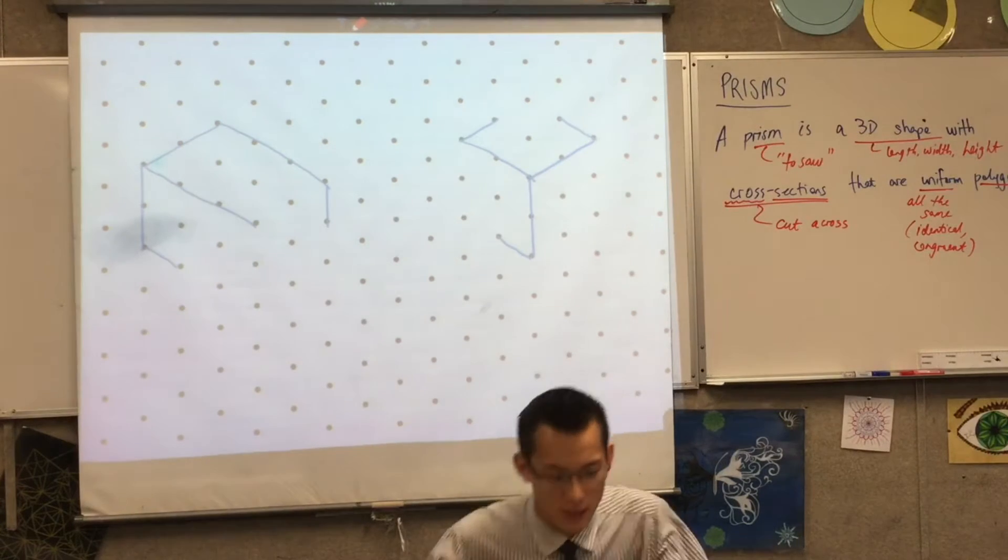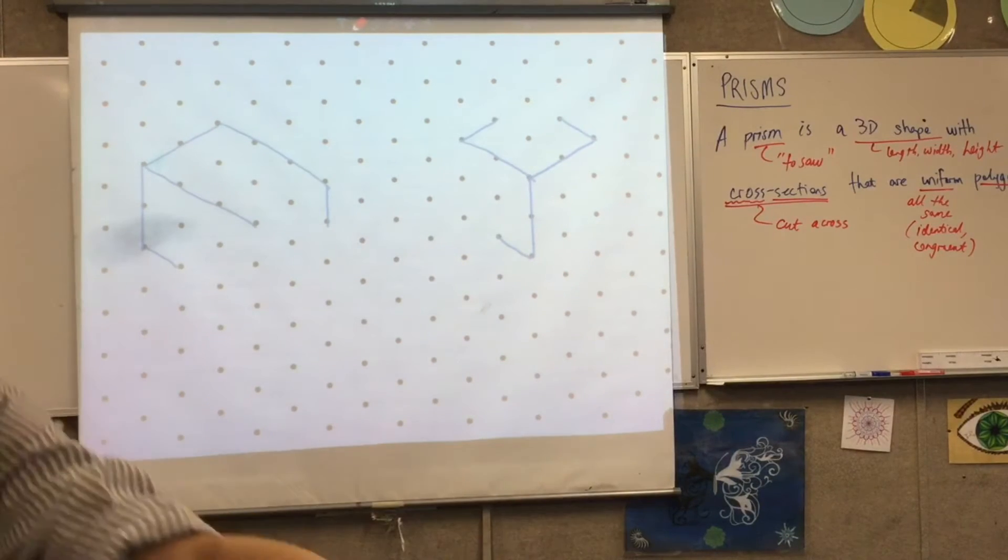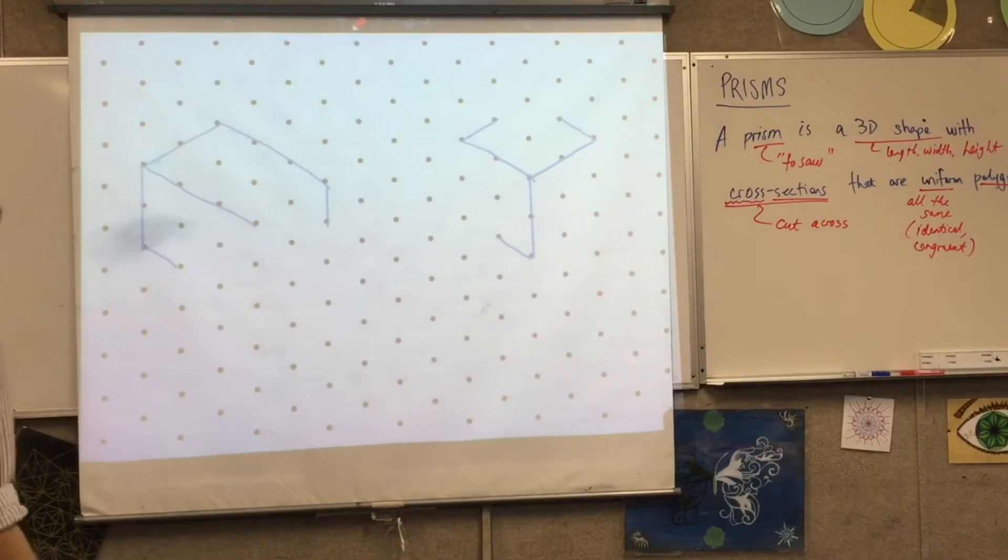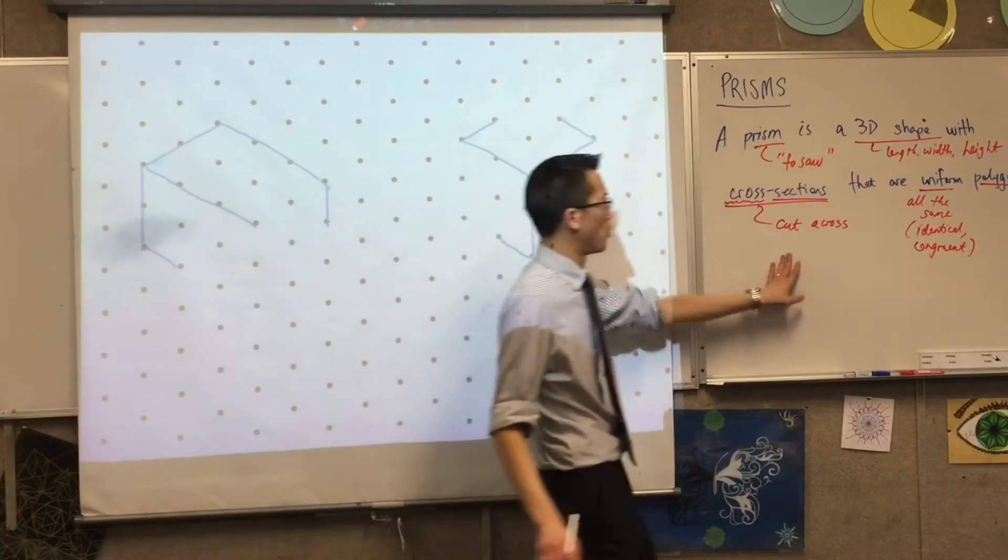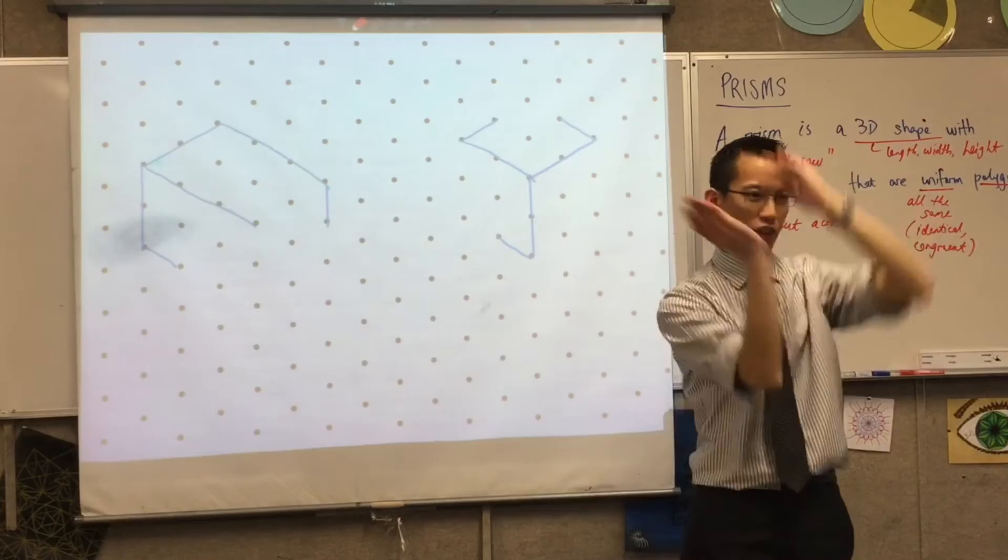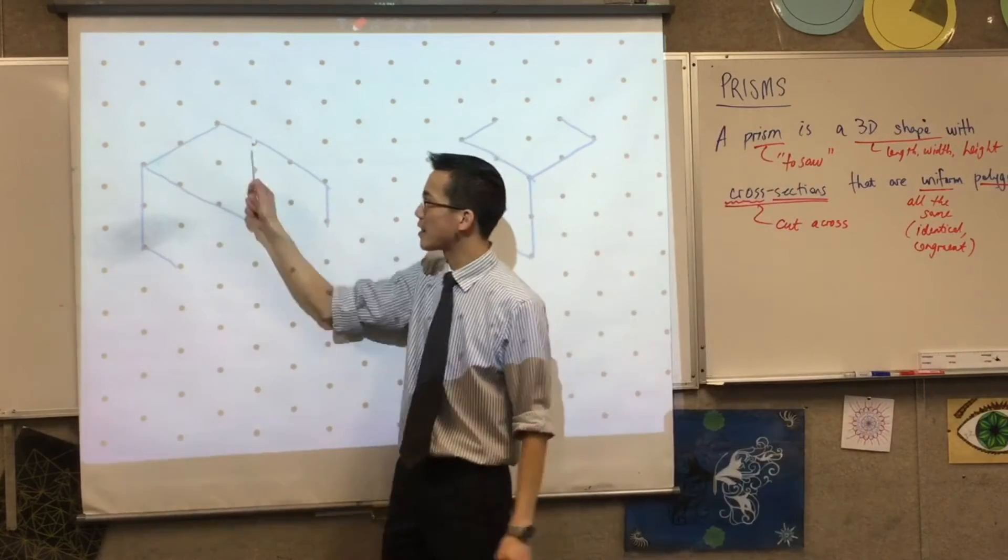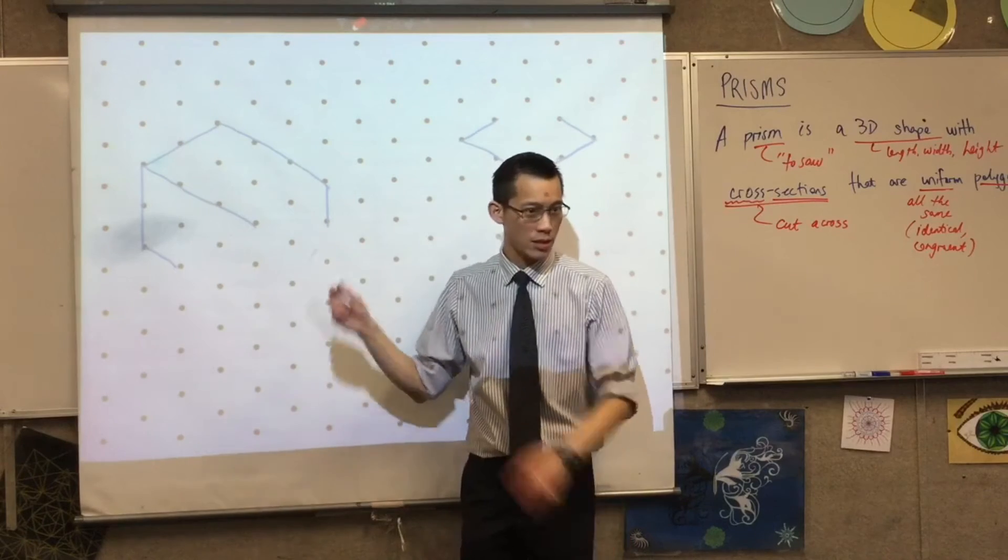Now everything that we need to know about prisms comes from our definition which I've left up on the board here. We know it's 3D, so when you see these lines going off in different directions, they correspond to a length and a width and a height. So that's what that means.